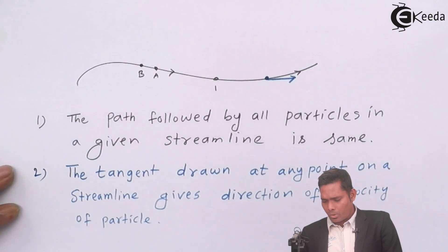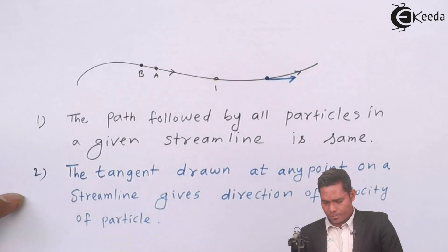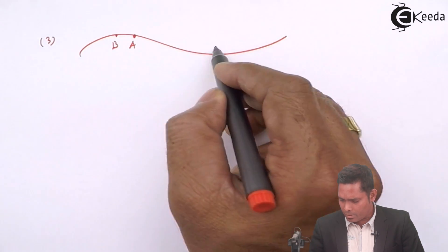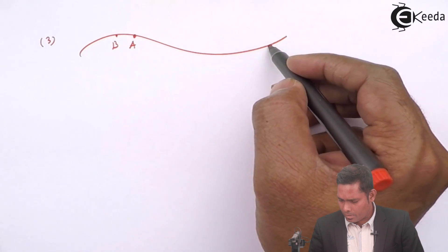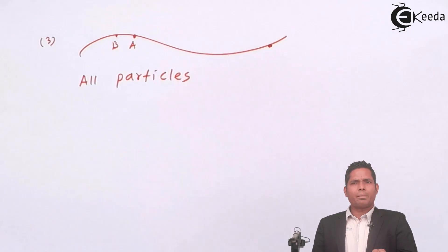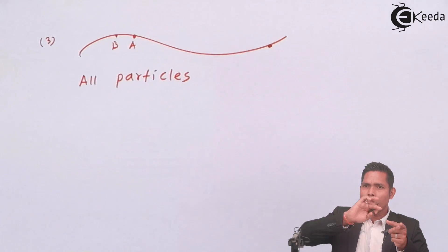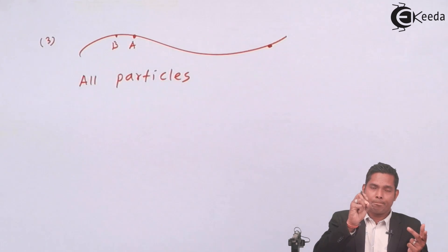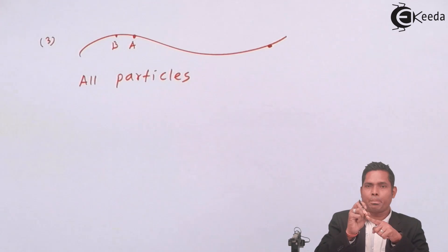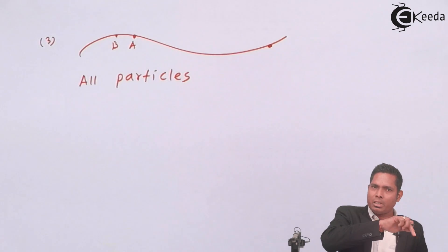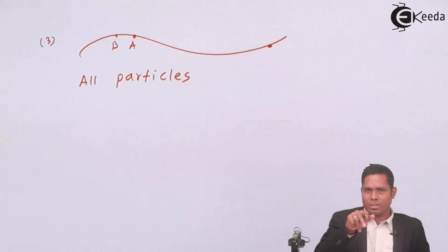Another point: considering the same streamline with particles A and B, all particles must have the same velocity passing through a given point. If you change the point, the velocity will change. But if you stick to a particular point, all particles passing through that same point must have the same velocity. That means for a streamline, the velocity at different points may be different, but particles passing through a given point must have the same velocity.